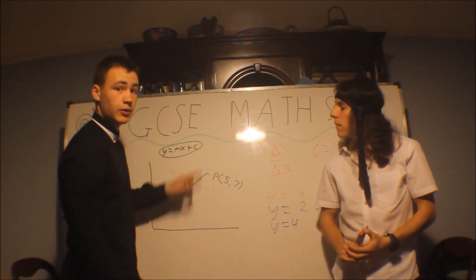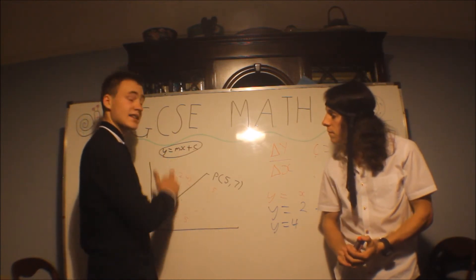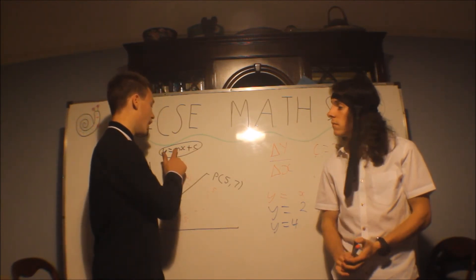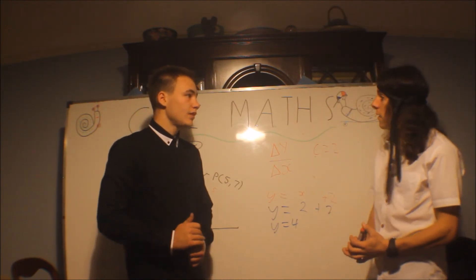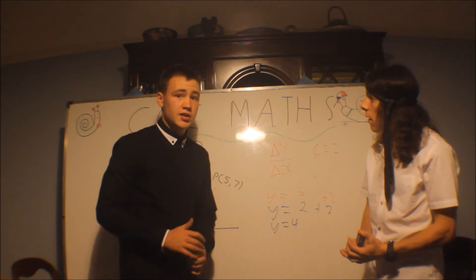Yeah. So m is the gradient, c is the y-intercept, and when you put it in its form, you leave x as x. So it's y equals a number of x plus a number. And I think, is that all the equations done? I think it is.